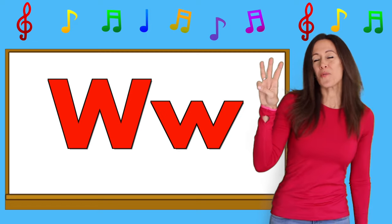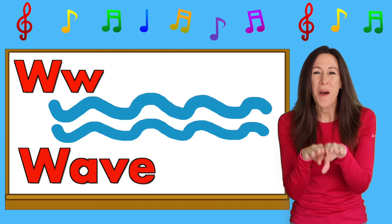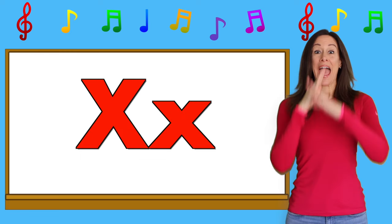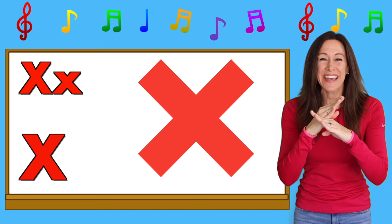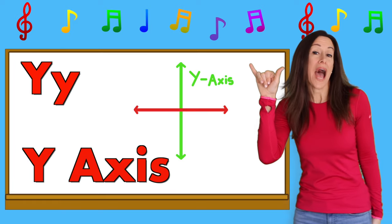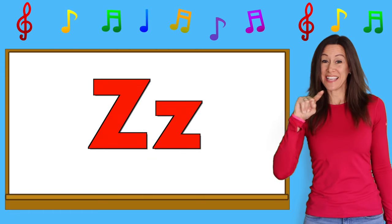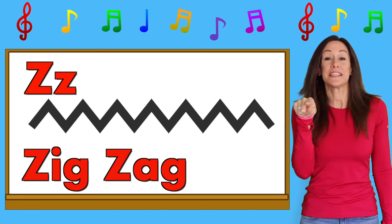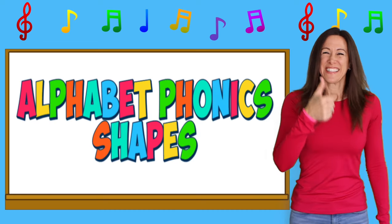W is for Wave. X is for X. Y is for Y-Axis. Z is for Zig-Zag. Good job!